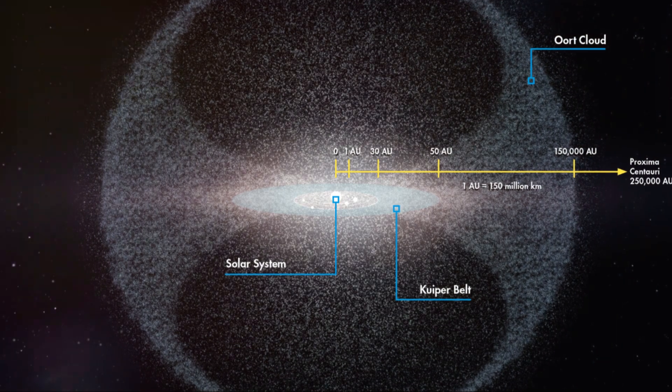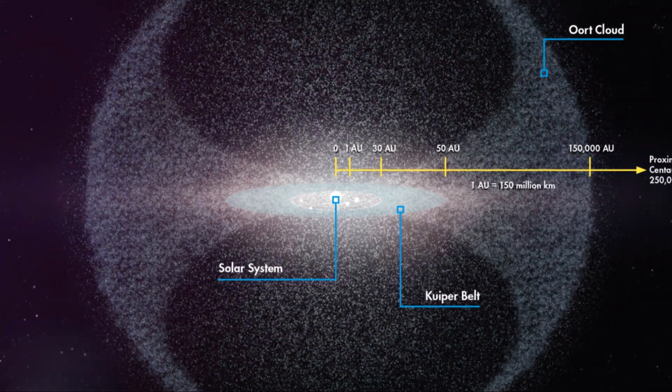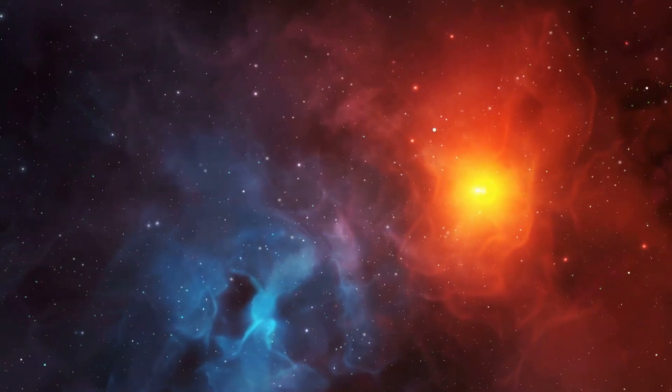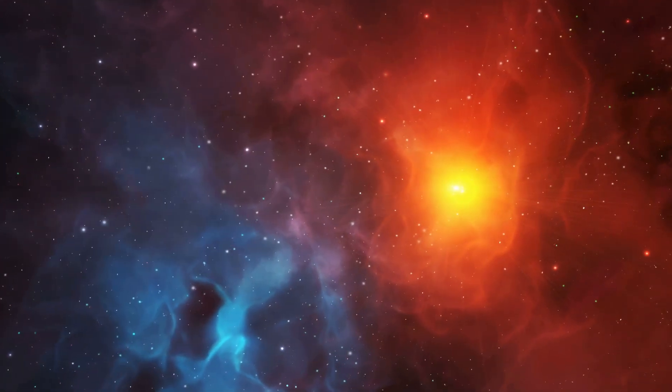The outer edge extends outward, perhaps as far as 100,000 astronomical units, which is almost halfway to the next nearest star system, Proxima Centauri. This immense distance underscores the vastness of our solar system's outermost frontier.